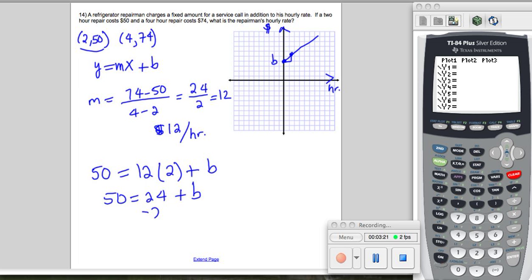Now subtract 24 from both sides, so b is 26. In other words, he charges $26 just to show up, and then for every hour that he works he charges $12. So if he doesn't do anything, he just comes and works zero hours, that means x is zero, then y ends up being 26. That's our b, that's 26.